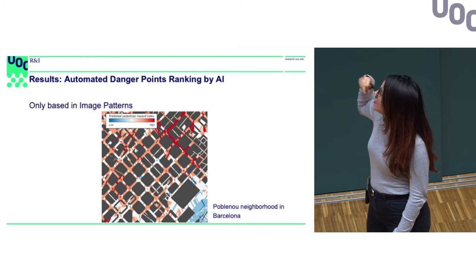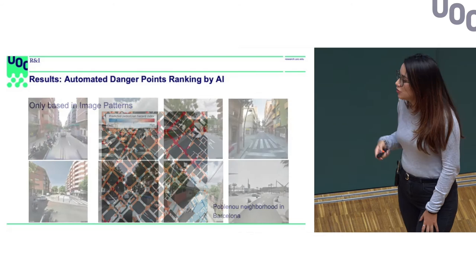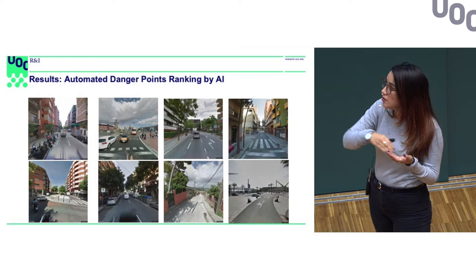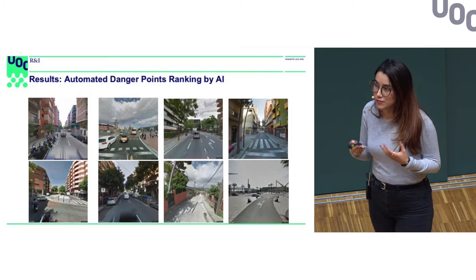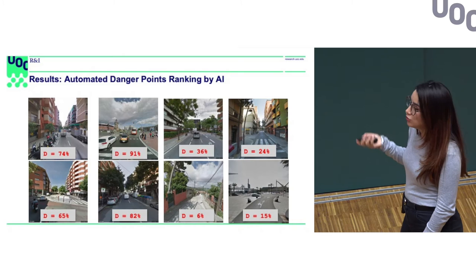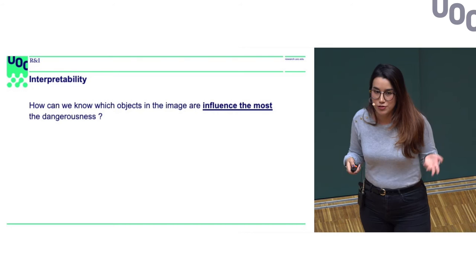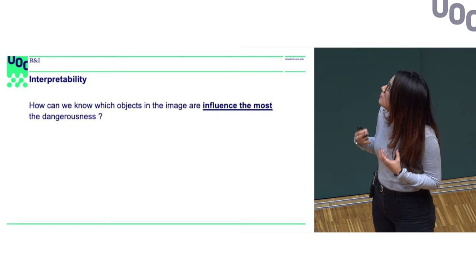Each point on the map indicates how dangerous it is for pedestrians. For example, this is a map of the Poble Nou neighborhood in Barcelona. This means that regardless of whether an accident has happened on a street before, our artificial intelligence system can predict — based only on visual features — how dangerous it is. The AI takes urban scene images and automatically scores them according to a danger score.